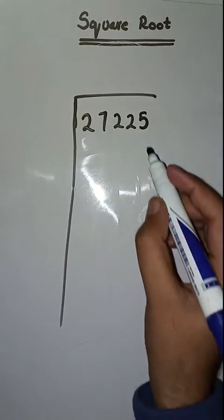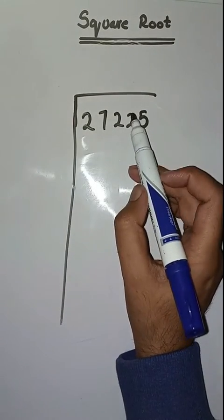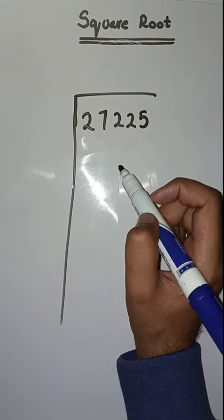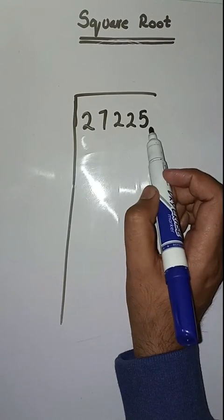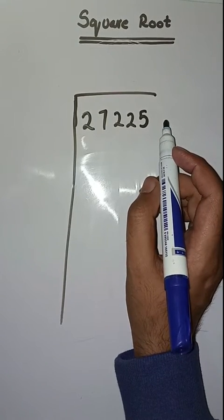Hello students, hope you all are fine. Welcome to my channel. Today we will learn how to find square root. We have to find square root of 27225. So first step is we have to make pairs from right to left like this: 25, 72, and 2.